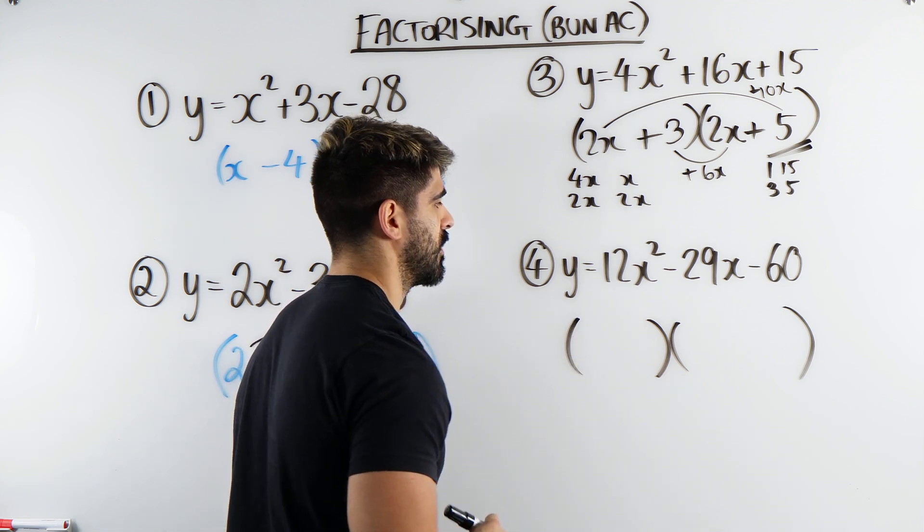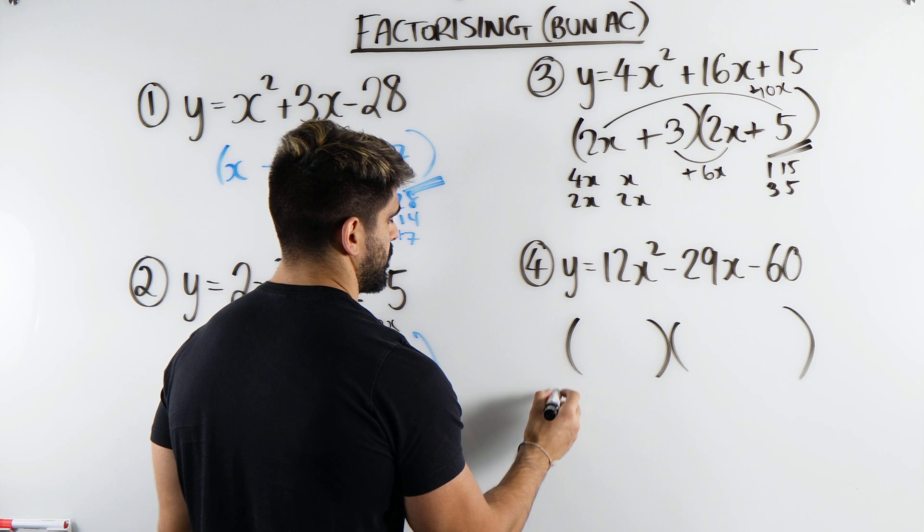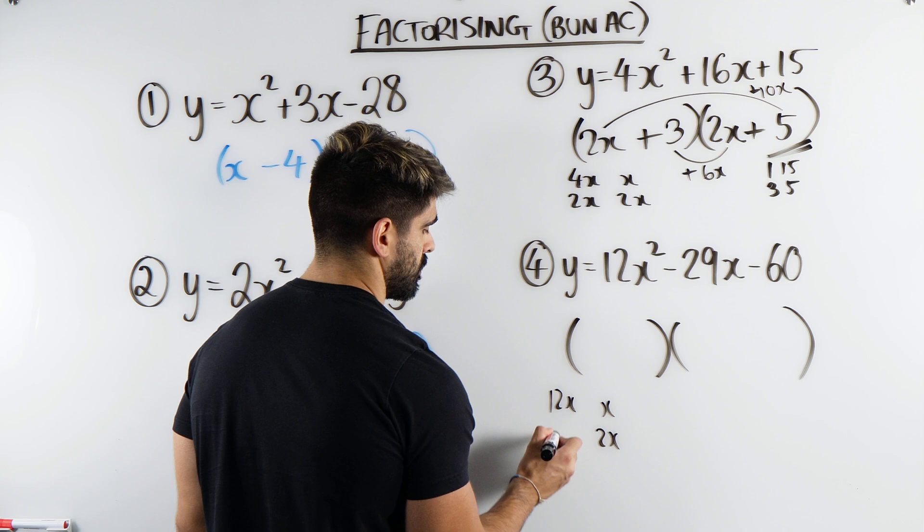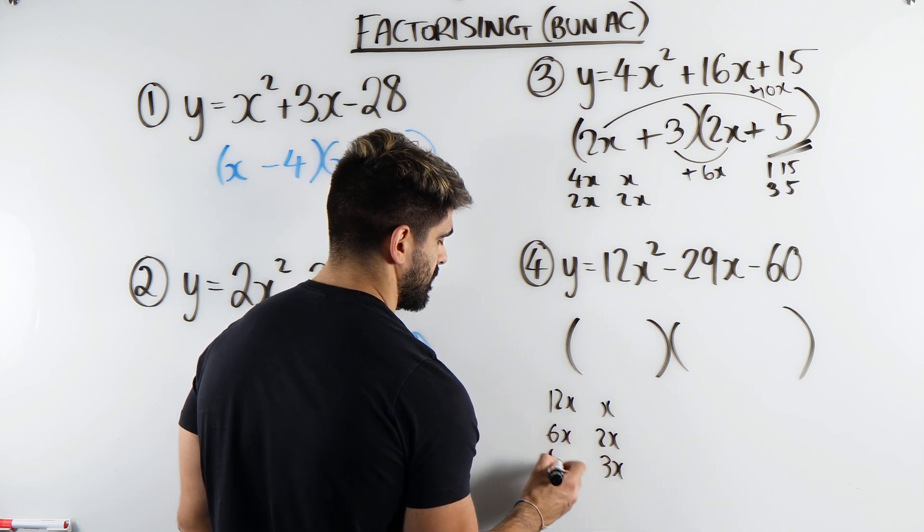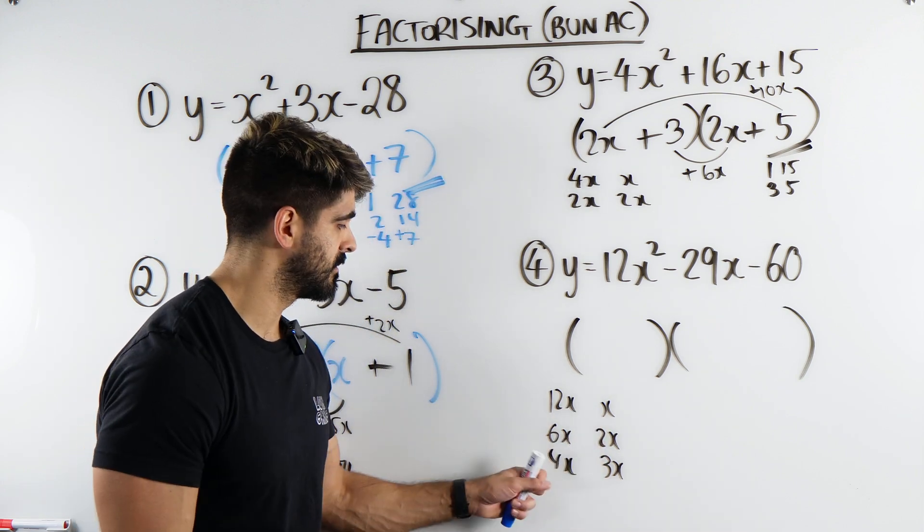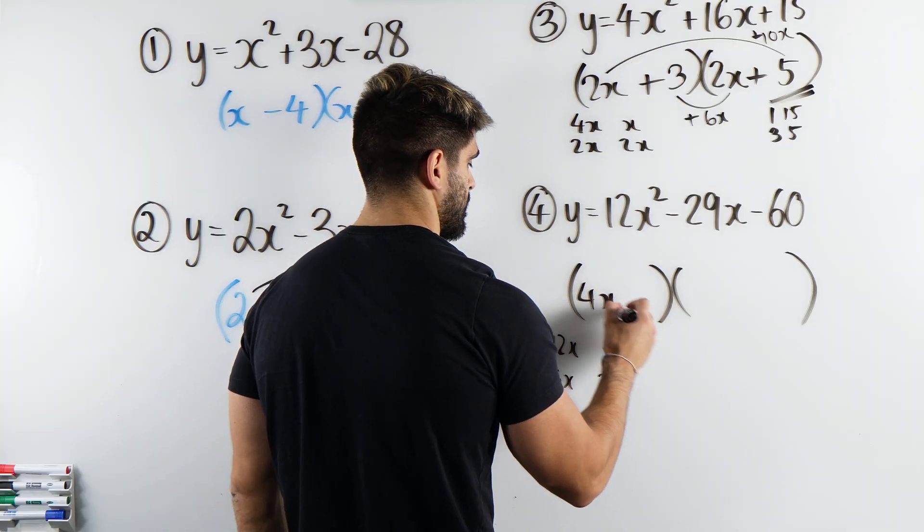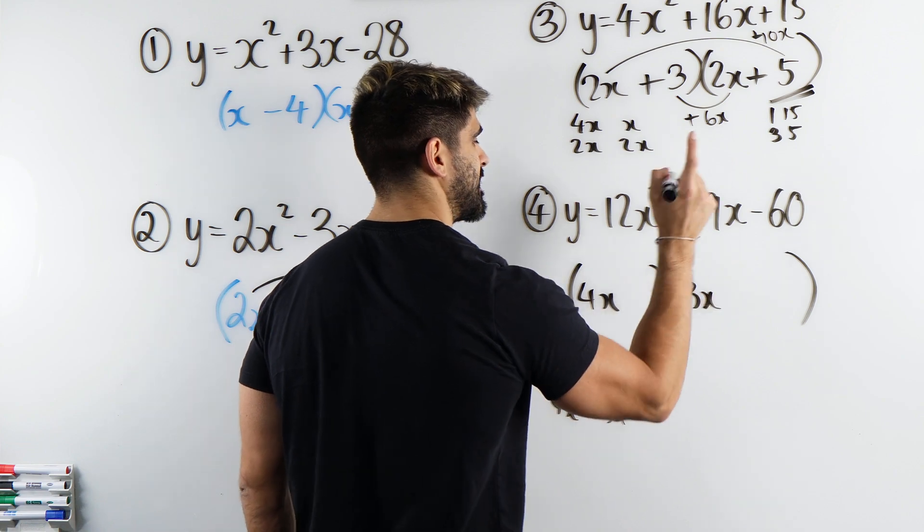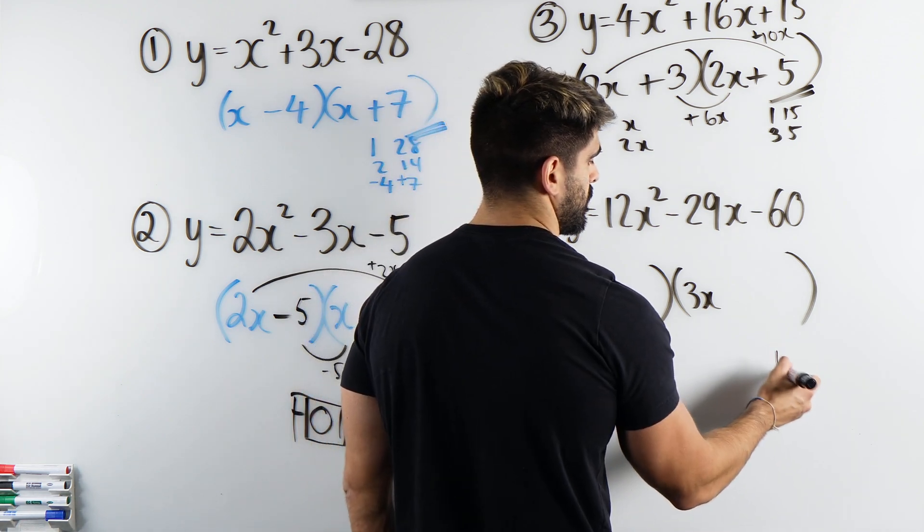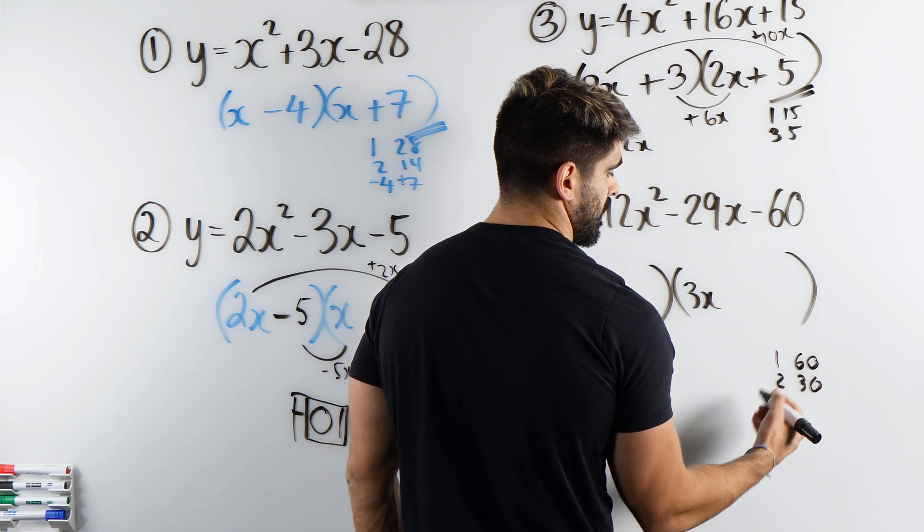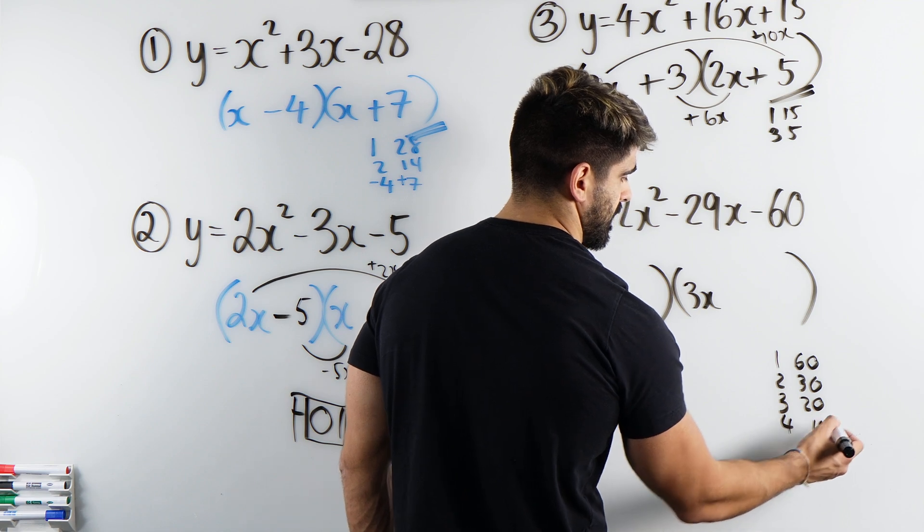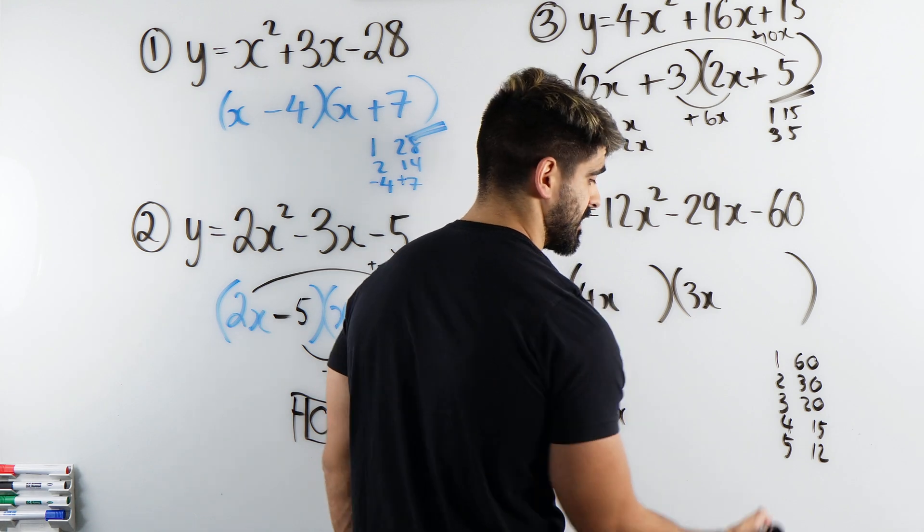So we're saying what multiplies to give you 12x squared? So we have options. We have 12x and x, 12 and 1. We have 2 and 6. We have 3 and 4. Which option do you think we should try first? The ones closest together. We have 4x and 3x. 60, we have tons of options. So let's go through them. 1 and 60, 2 and 30, 3 goes in 20 times, 4 goes in 15 times, 5 and 12, 6 and 10.